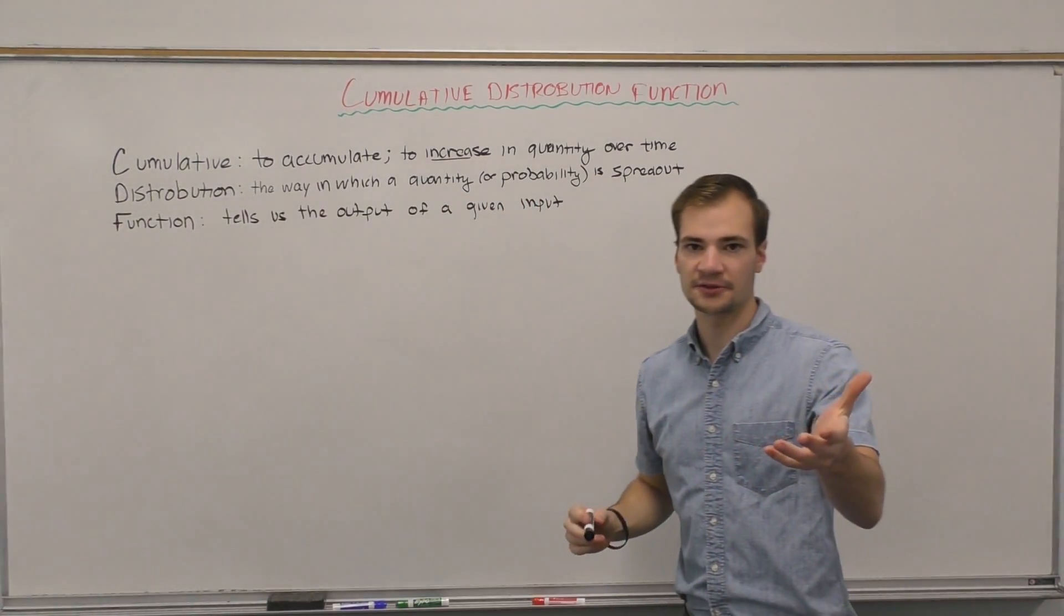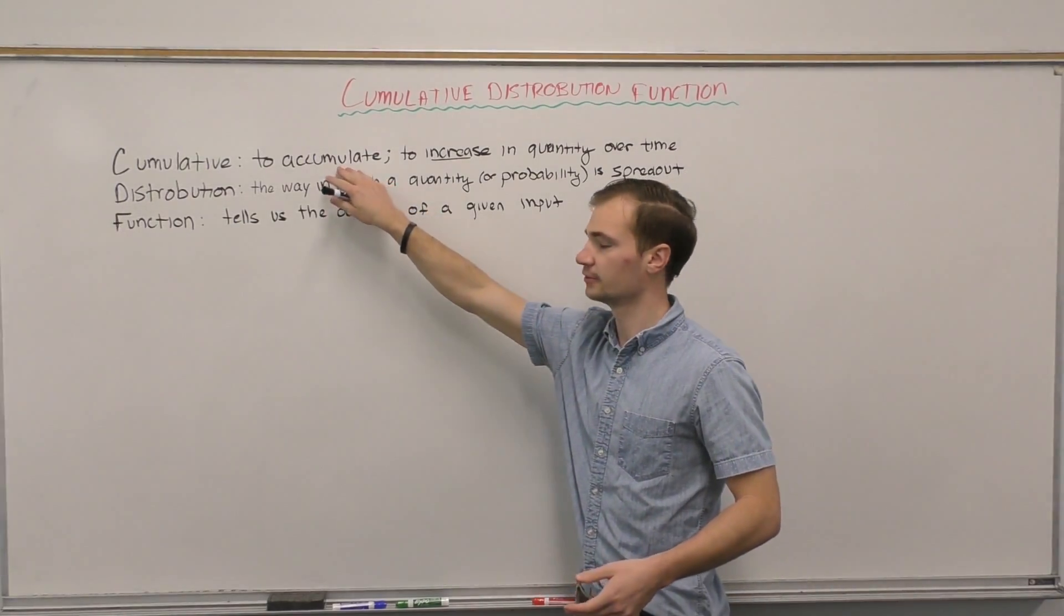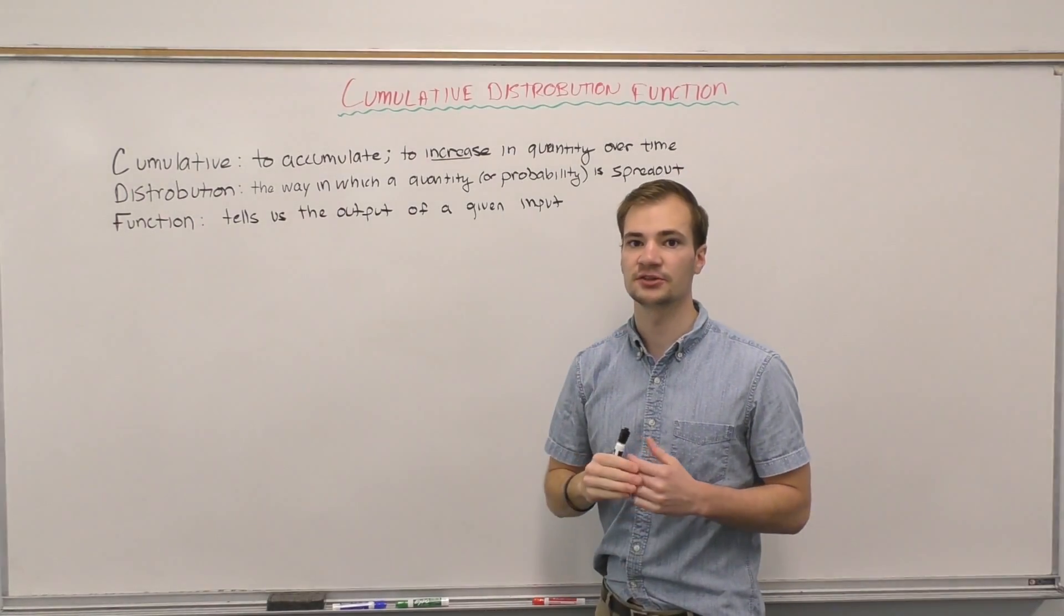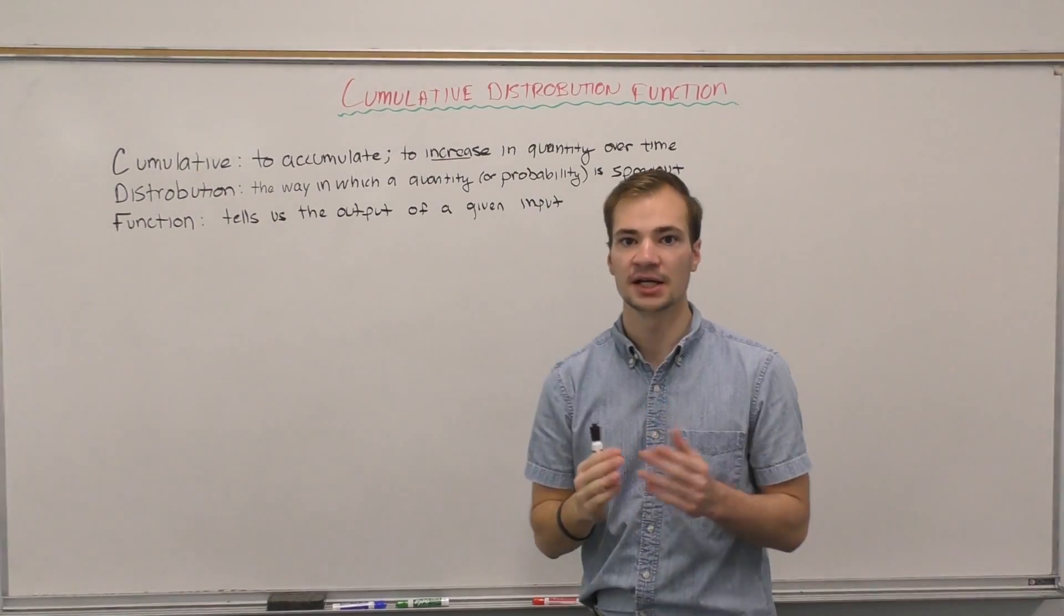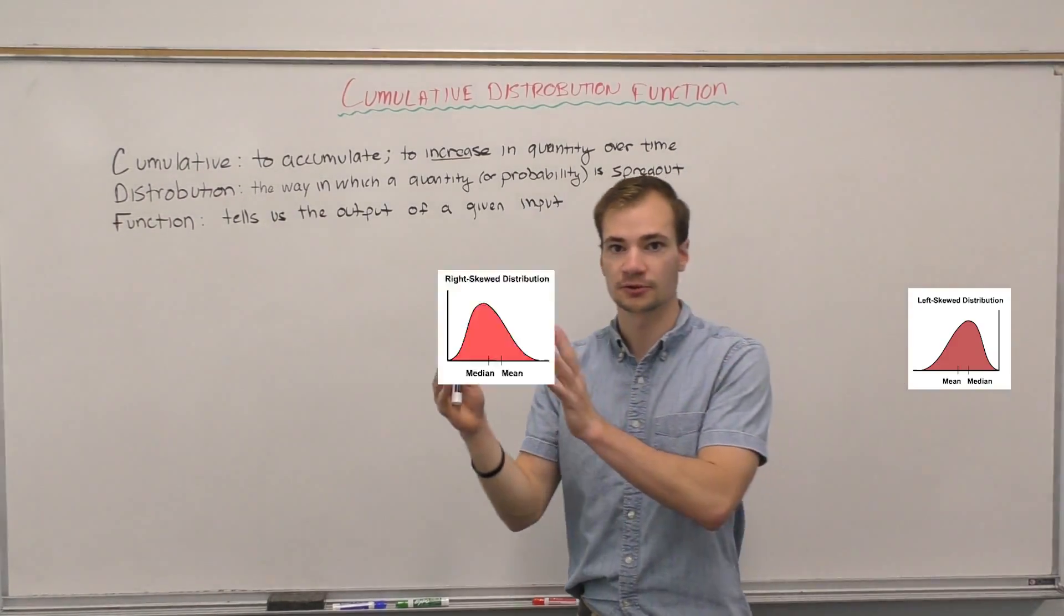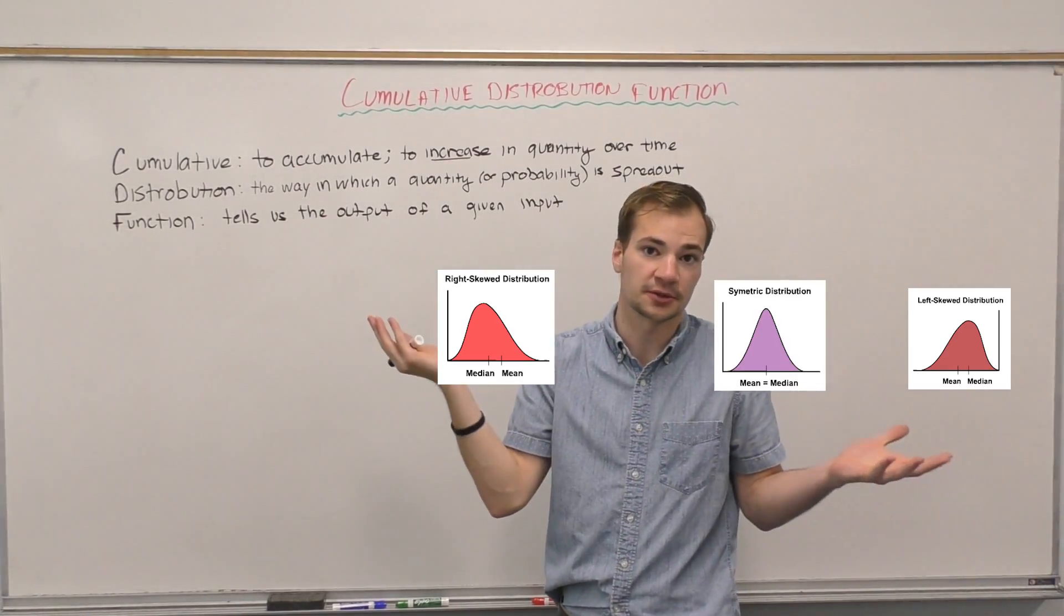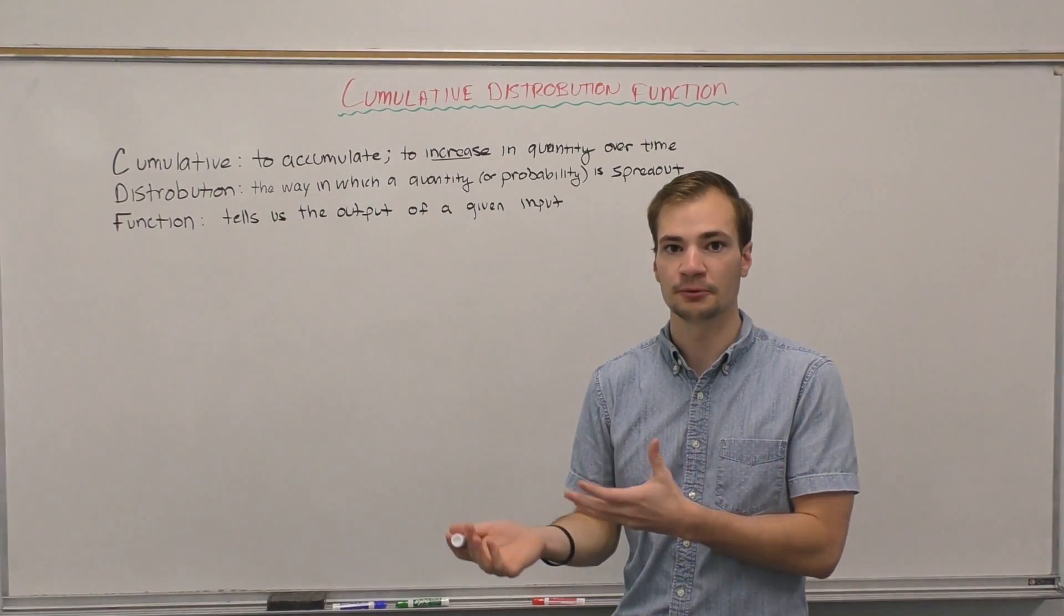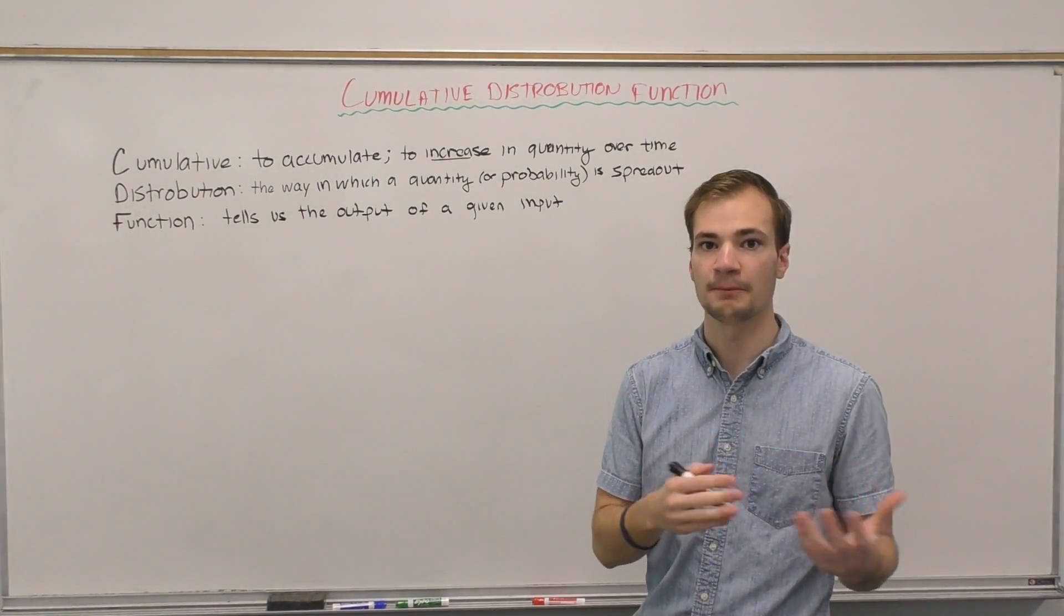So let's look at the definition of a cumulative distribution function. There's really nothing hidden in this definition, right? Cumulative just means to accumulate, so we're gathering over time. Distribution tells us how it's spread out - is it bunched towards one end or toward the other or evenly distributed? And then the function says that for any given input it will give us an output, so we can measure something for a given X.